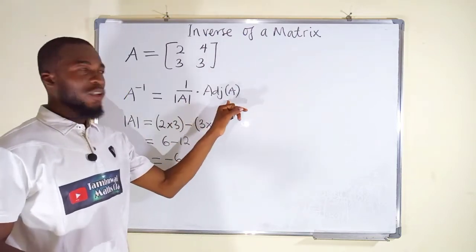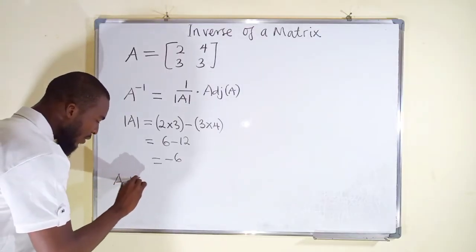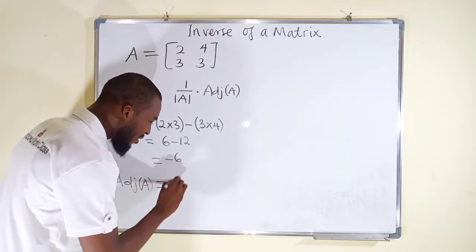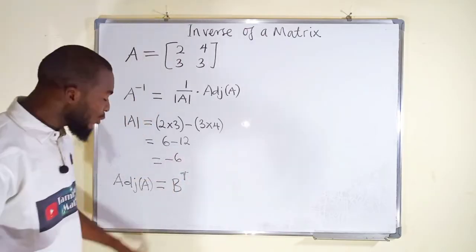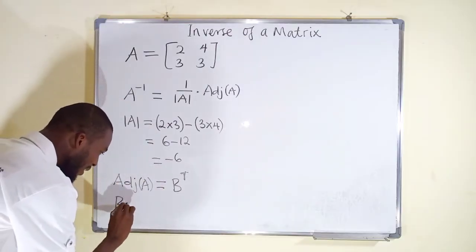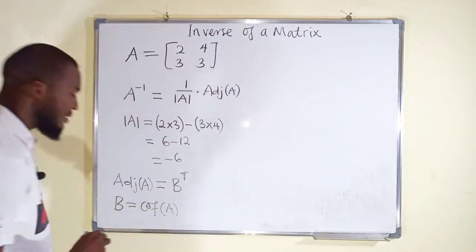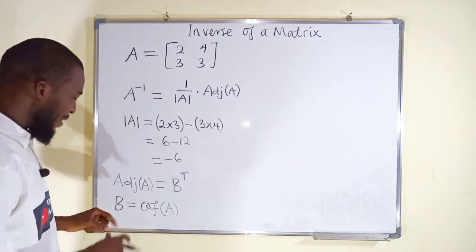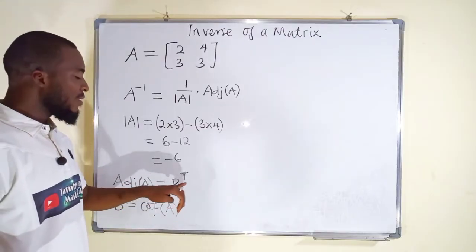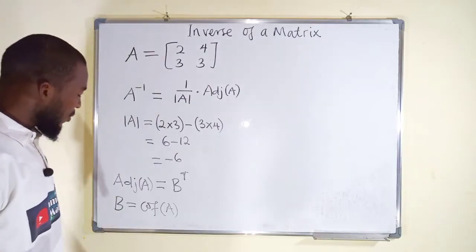Now let us go ahead and find the adjoint of this matrix. The adjoint of matrix A is nothing but B transpose, where matrix B is the cofactors of matrix A. So we are going to do two things: first, find the cofactors; second, find the transpose of the cofactors. The transpose of the cofactors is said to be the adjoint of matrix A.